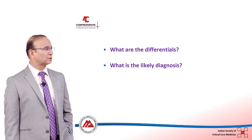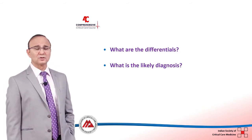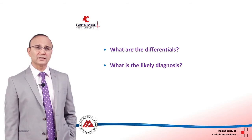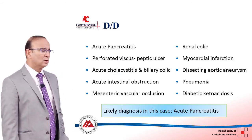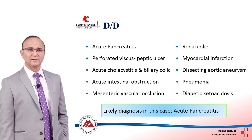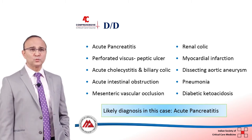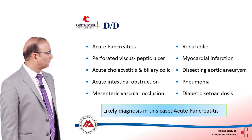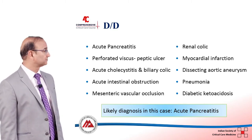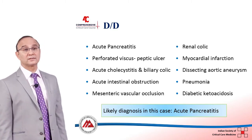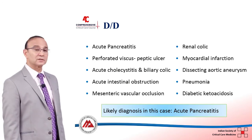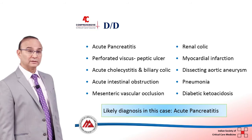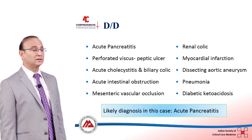This is the kind of presentation where you would think of a lot of differentials. With these symptoms, you would consider acute pancreatitis, perforated viscus, peptic ulcer, acute cholecystitis and biliary colic, acute intestinal obstruction, mesenteric vascular occlusion, renal colic, myocardial infarction,